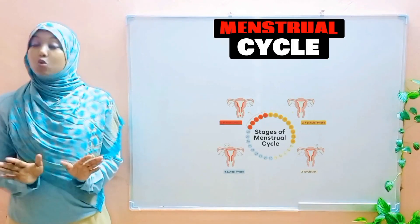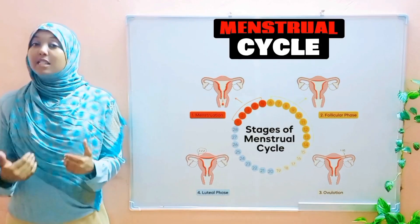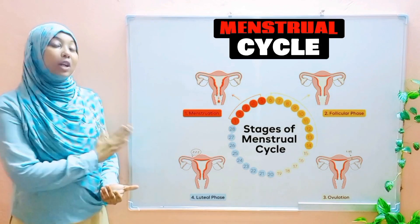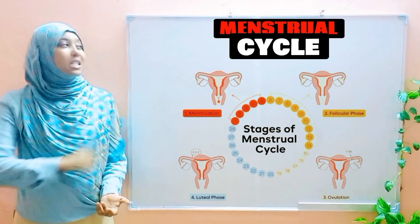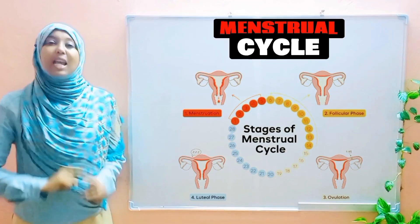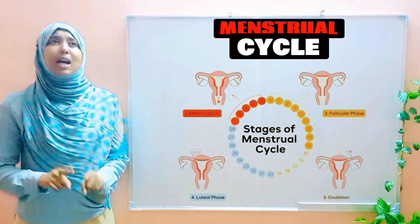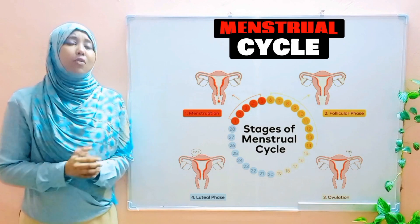Our first phase is menstruation. This is followed by the follicular phase. The third phase is ovulation. And lastly, we have the luteal phase.